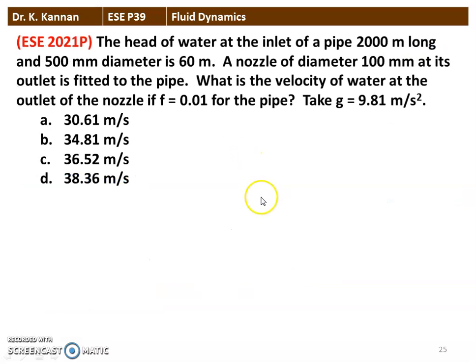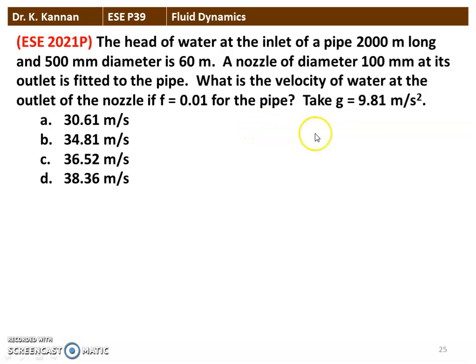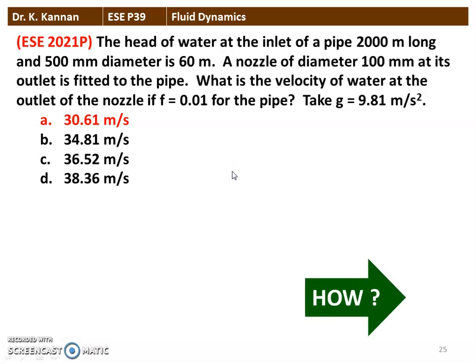The next question is from the 2021 question paper. The head of water at the inlet of a pipe 2000 meters long and 500 millimeters diameter is 60 meters. A nozzle of 100 millimeters diameter at its outlet is fitted to the pipe. What is the velocity of water at the outlet of the nozzle if F = 0.01 for the pipe? Take G = 9.81 m/s². The correct answer is 30.61 meters per second.